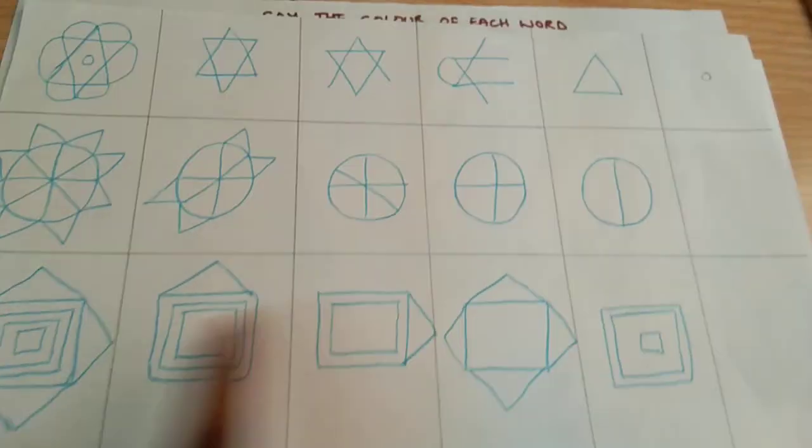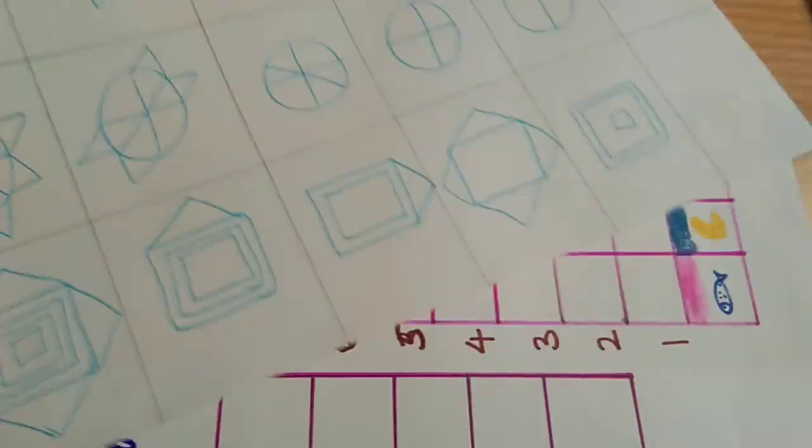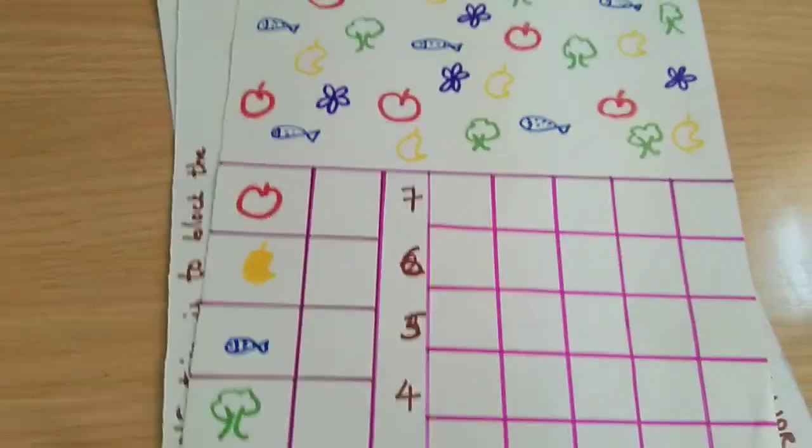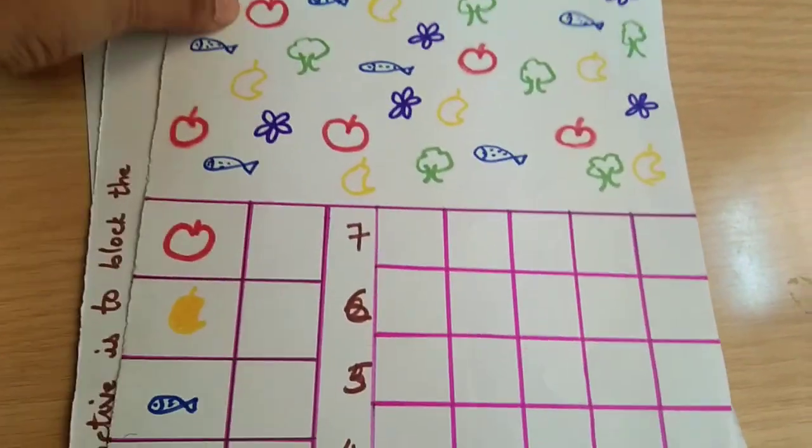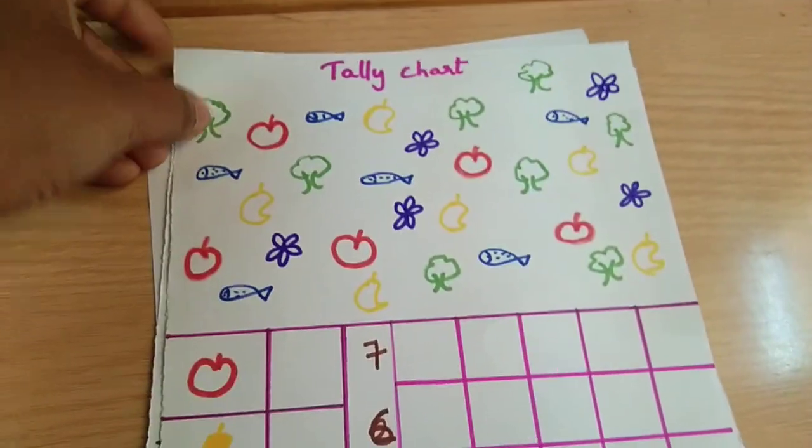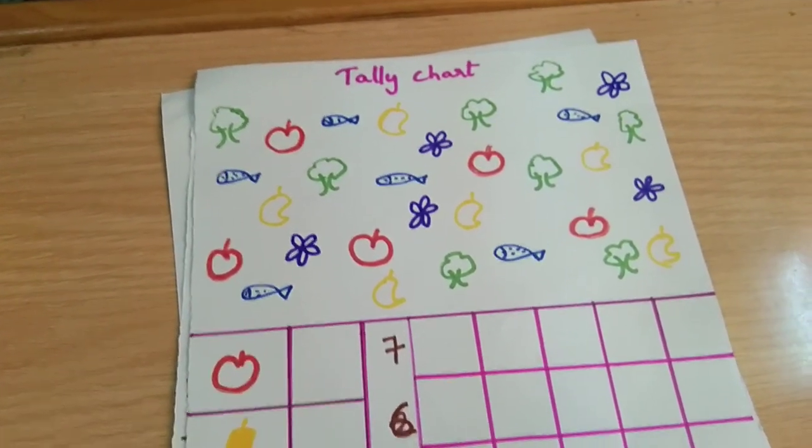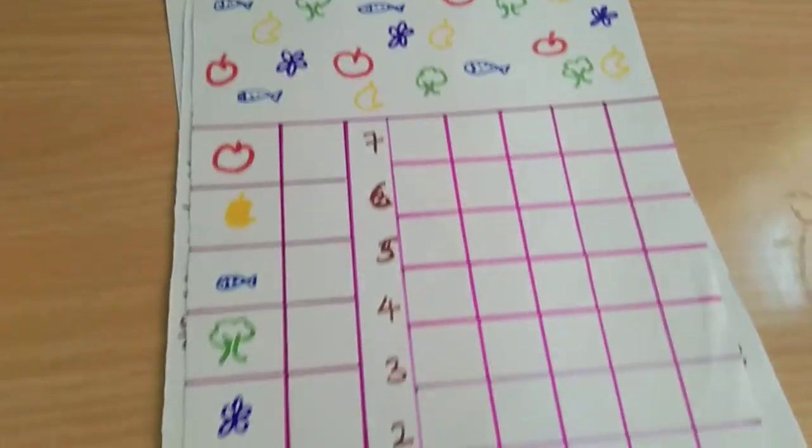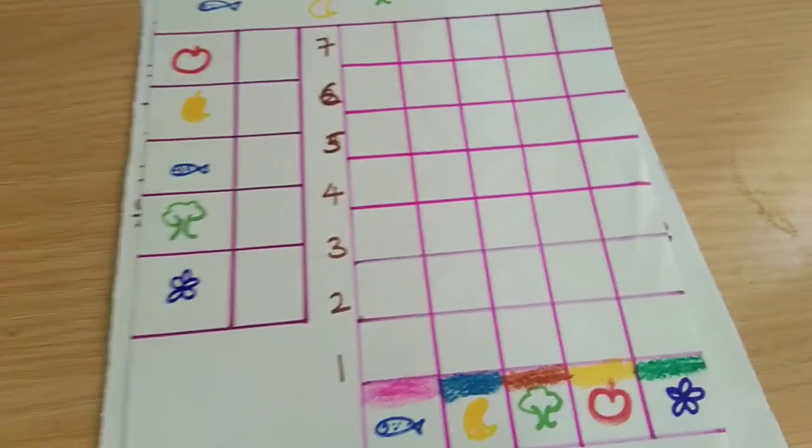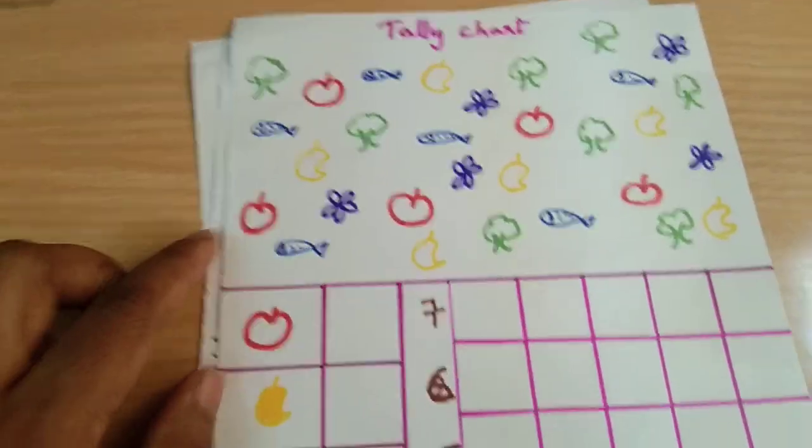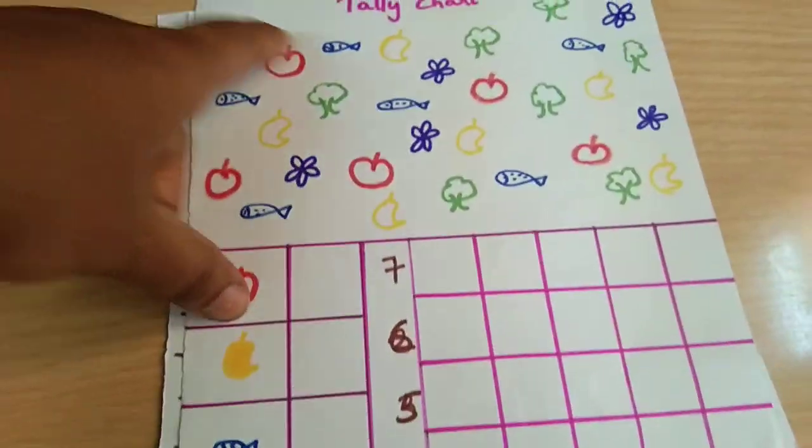This is a tally chart. For Rithvik right now, I have been thinking to introduce division and basic graph to him. This is the graph idea. I found it very interesting, that's why I have picked this idea as well. You can see the grid here, I have just drawn the pictures.